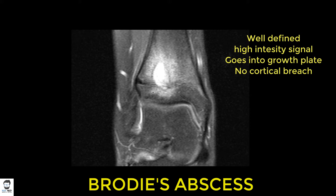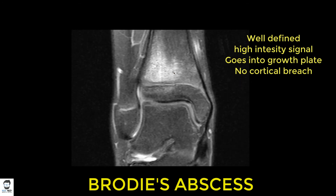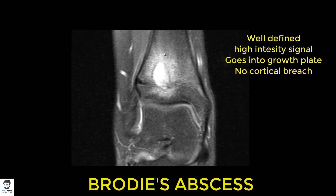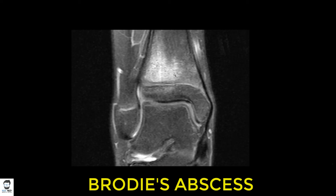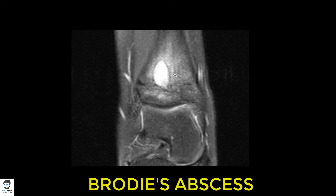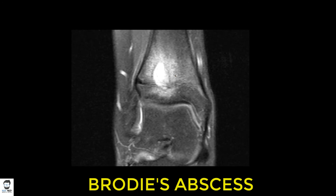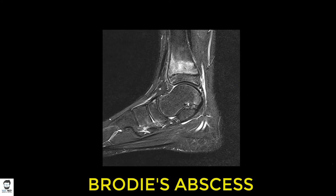The soft tissues and bony cortices look good, but there is bony edema around the lesion, which is usually indicative of infection. To differentiate this from osteoid osteoma: osteoid osteoma would not have as much bony edema, is usually less than one centimeter in size, and patients typically get pain relief from NSAIDs since osteoid osteoma releases prostaglandins.